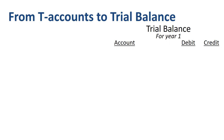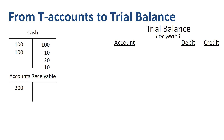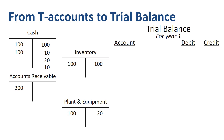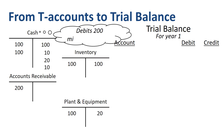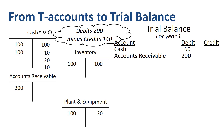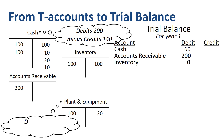Accountants usually start a trial balance with assets. In this example, four asset accounts — cash, accounts receivable, inventory, and plant and equipment — have one or more journal entries posted to them. Add up the debits and credits from journal entries: for the cash account, the sum of the debits is 200 and the sum of the credits is 140, so the balance is debit 60. Accounts receivable: 200. Inventory: 0. Plant and equipment: 100 debit minus 20 credit is a debit balance of 80.